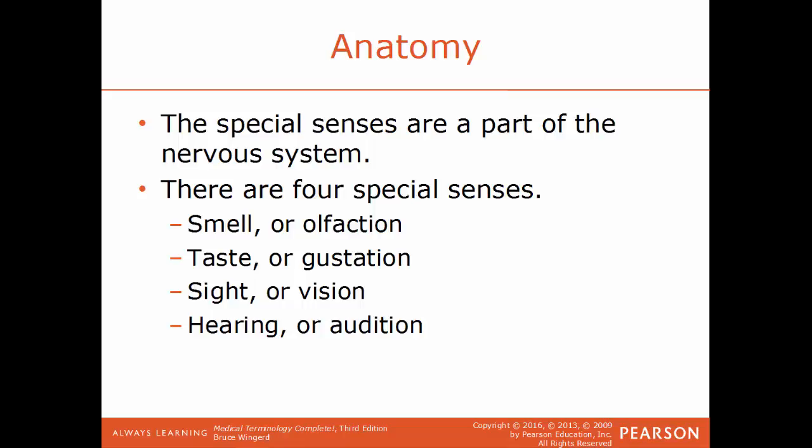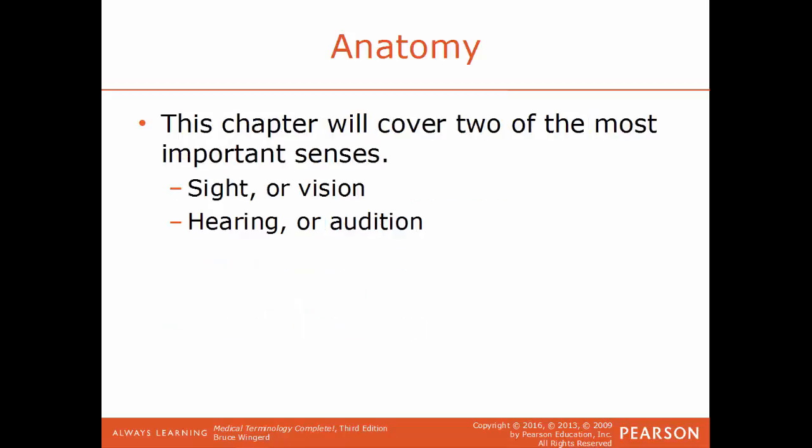Now we'll go over some basic anatomy. The special senses are a part of the nervous system. Of the five senses that we have, four of them are considered to be special senses: sense of smell or olfaction, taste or gustation, sight or vision, and hearing or audition. These four are considered special senses because all of their receptors are centralized in one body part — focused just within the head. The sense of touch has receptors all over the body, so that is a general sense. This chapter will cover the sense of sight and the sense of hearing.